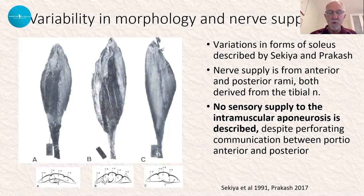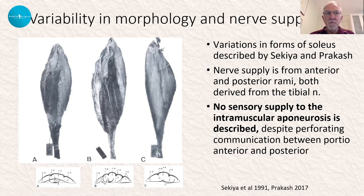The interesting thing is that there's quite a discrete nerve supply to the anterior portion and a different nerve supply to the posterior portion. If you read very closely the descriptions of nerve supply, there is no description of a nerve supply to the intramuscular aponeuroses, which I think is probably of some significance to us.